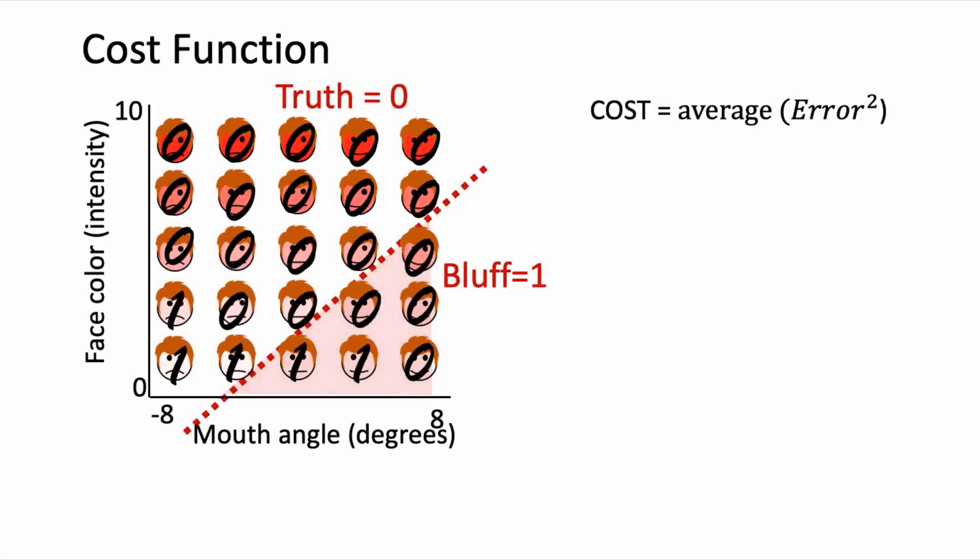This is a supervised learning problem, so a cost function we could use is the average squared error, which is the difference between the predicted label versus the actual label, squared, averaged across all our training data. We need to take the squared error so that positive and negative errors don't cancel each other out.